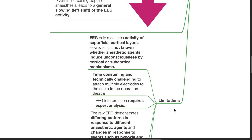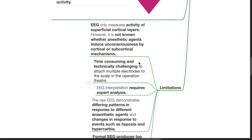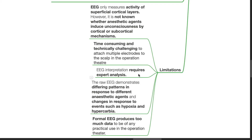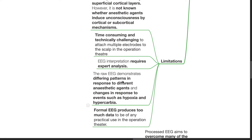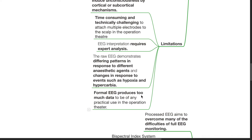Limitations of EEG measurement: EEG only measures activity of superficial cortical layers. However, it is not known whether anesthetic agents induce unconsciousness by cortical or subcortical mechanisms. EEG is time-consuming and technically challenging to attach multiple electrodes to the scalp in the operating theater. EEG interpretation requires expert analysis. The raw EEG demonstrates differing patterns in response to different anesthetic agents and changes in response to events such as hypoxia and hypercarbia. Formal EEG produces too much data to be of any practical use in the operating theater.